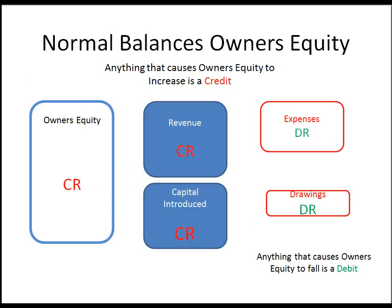Looking at normal balances of owner's equity: anything that increases owner's equity is a credit. Revenue increases owner's equity, so it's a credit. Any capital you introduce will be a credit. However, expenses reduce owner's equity, so they are a debit. Drawings also reduce equity in the business, so that's a debit. Anything that causes owner's equity to fall is a debit; anything that causes it to increase is a credit.